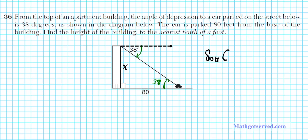Now we have a right triangle with two sides and an angle, so we use right triangle trig — SOH-CAH-TOA. We need to decide which ratio to use: is it sine (SOH), cosine (CAH), or tangent (TOA)?